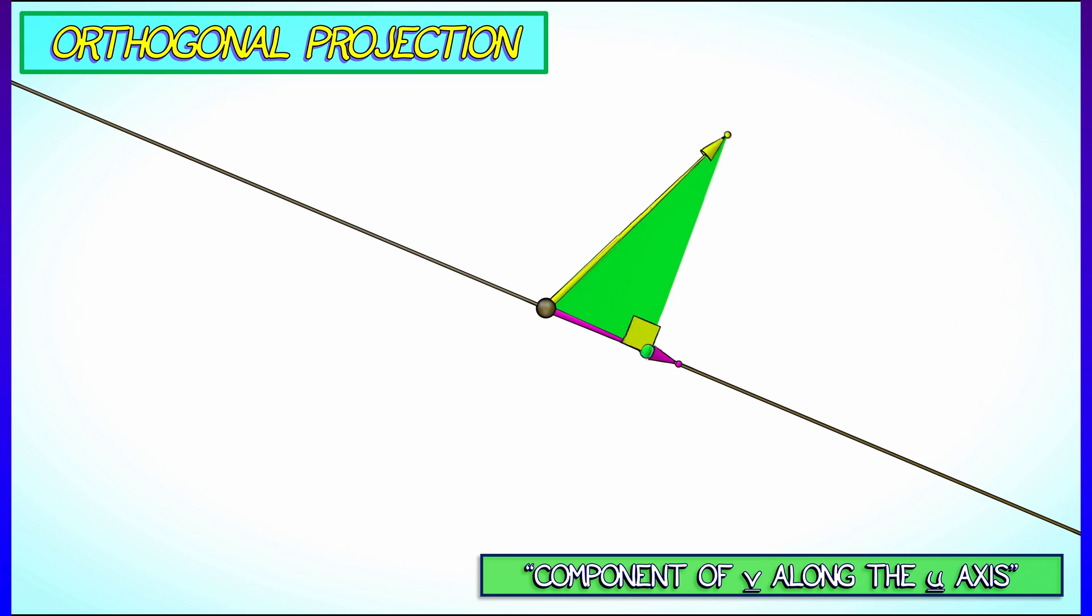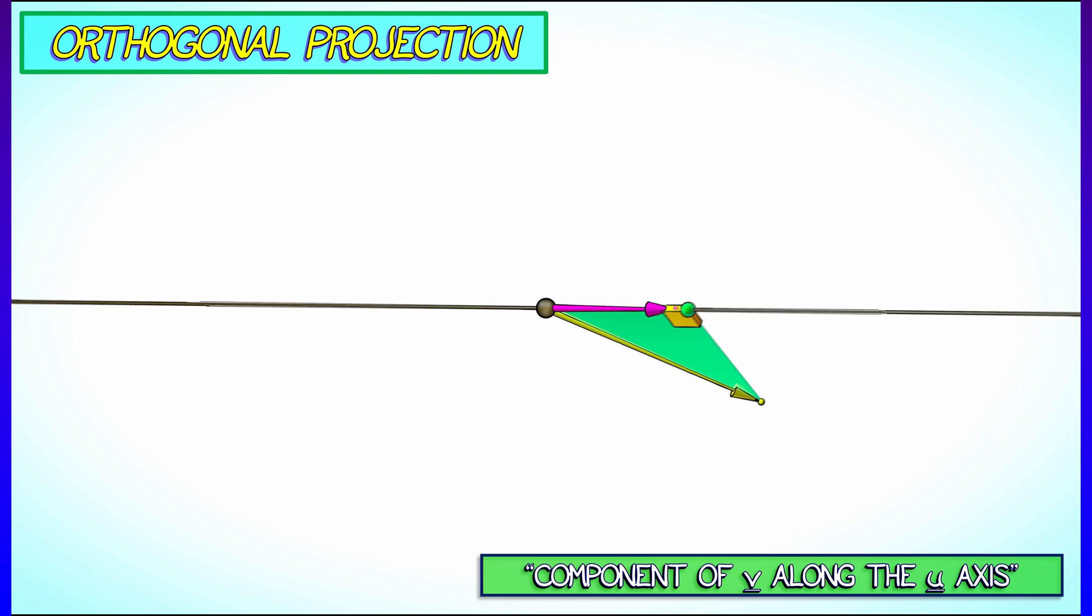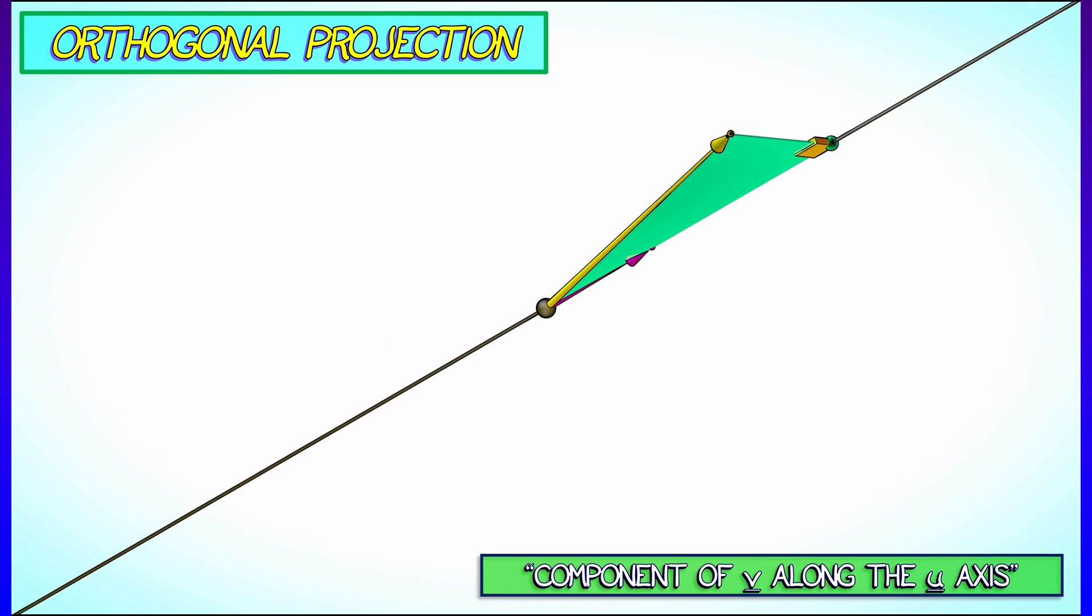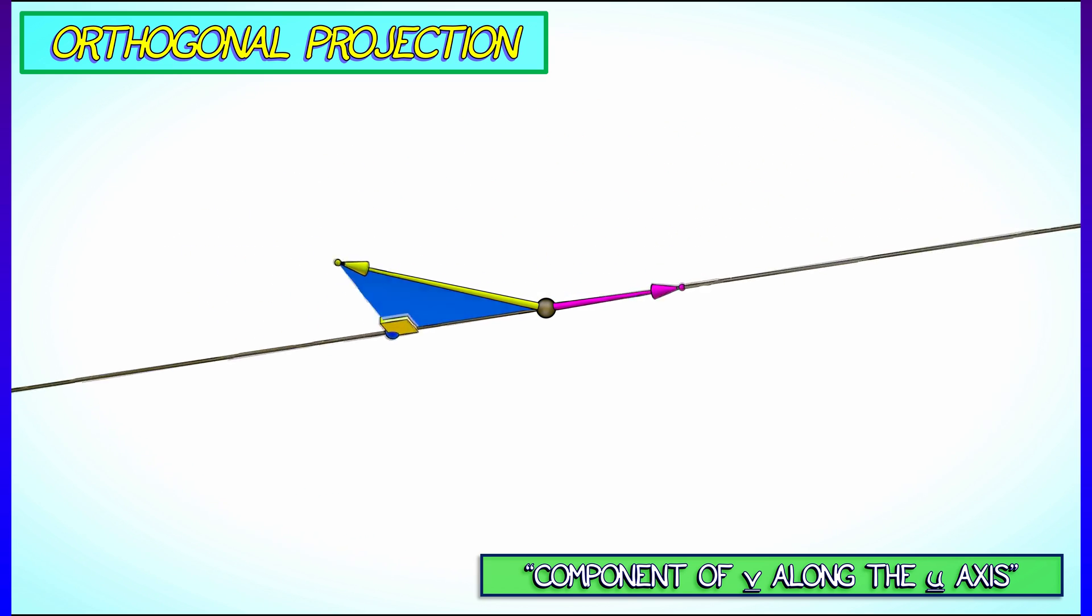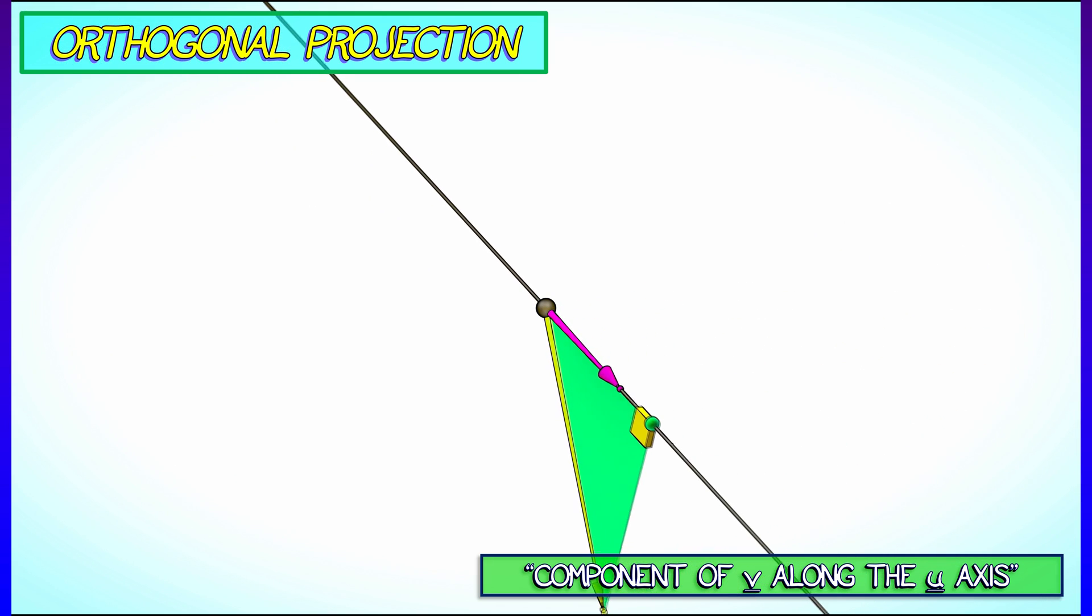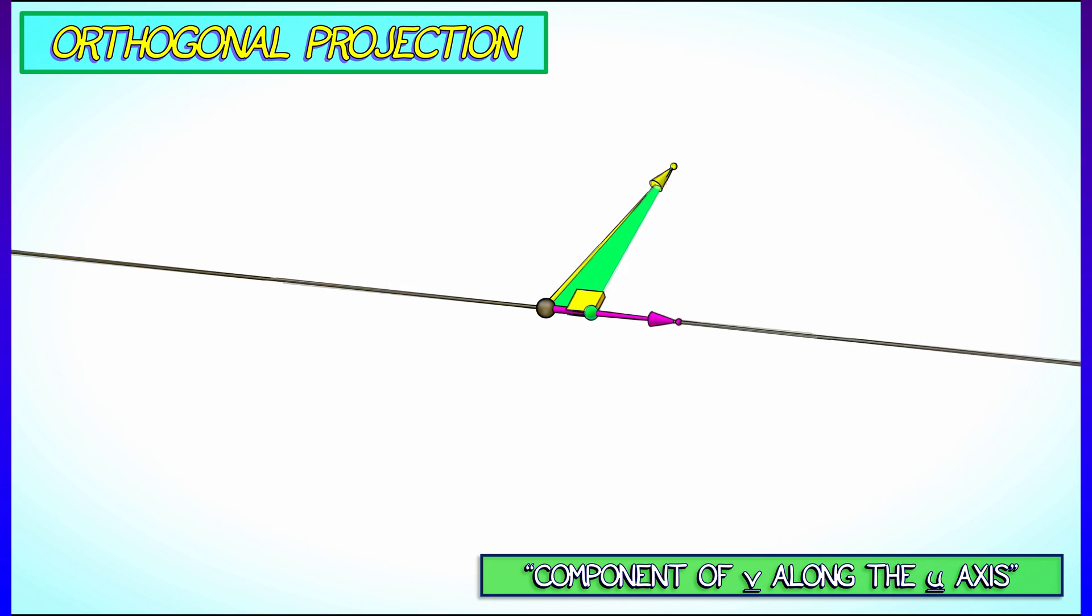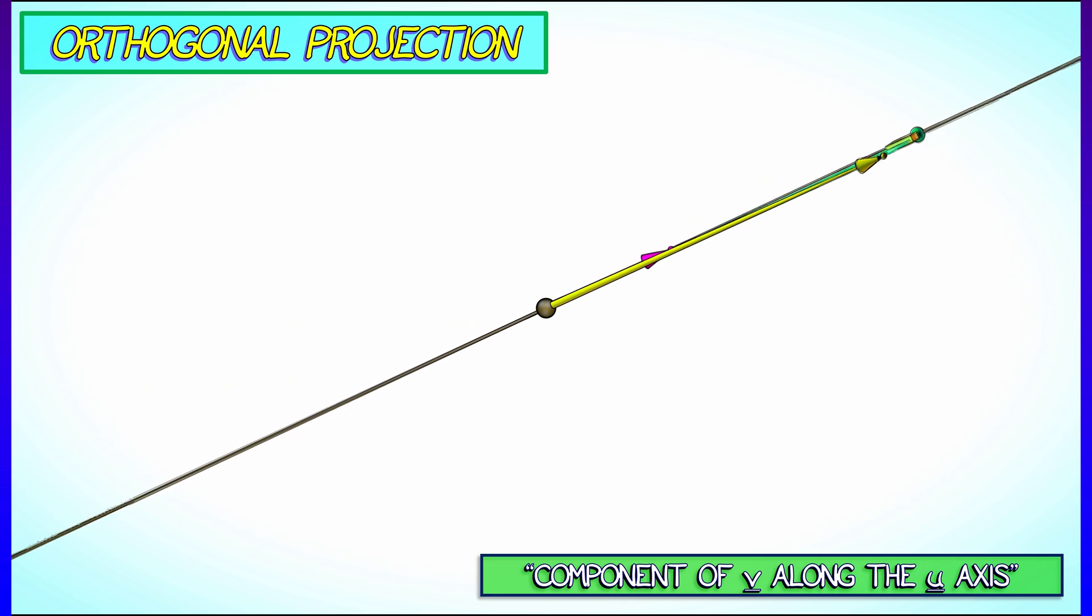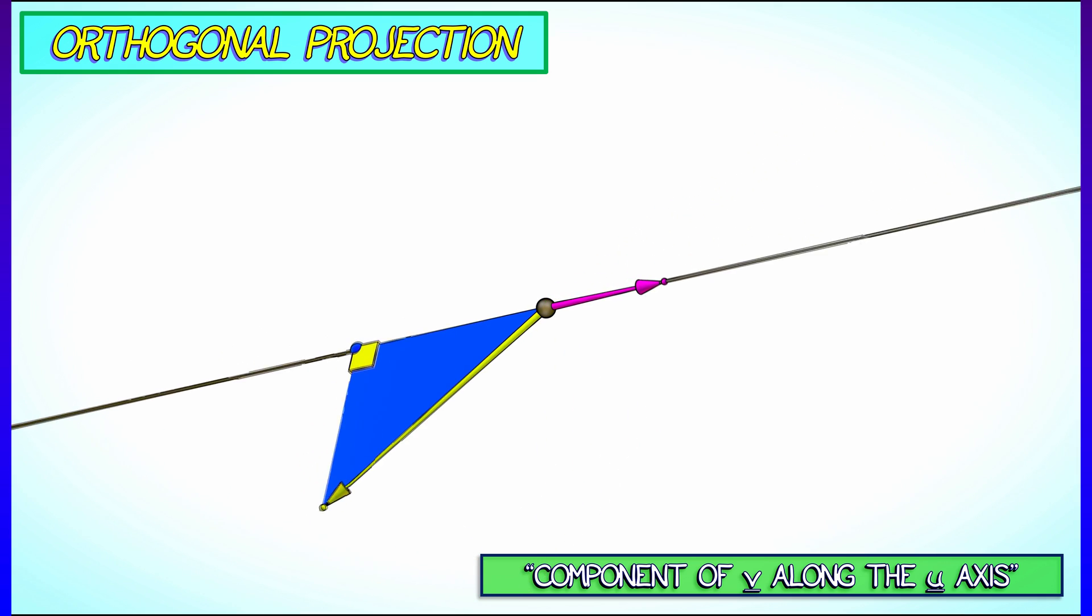So in general, what you get as you take your vector v and your unit vector u and you move them around and you look at different values of the dot product, you're really getting this oriented projected length after you do that orthogonal projection. Again, if they're roughly aligned in the same direction, you get a positive. Otherwise, you get a negative number. That's a good interpretation.